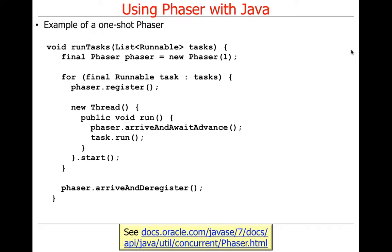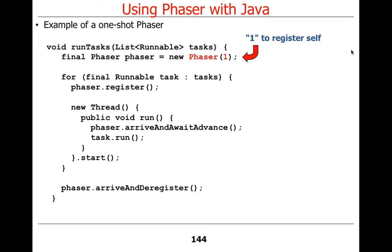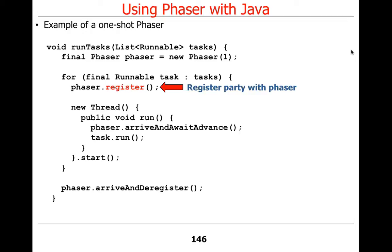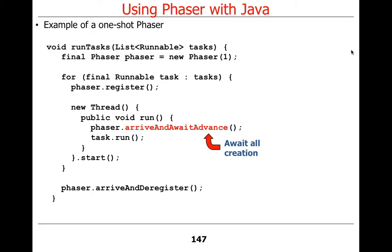The first example is a one-shot phaser. We have a method called runTasks given a list of runnables. The first thing we do is make a phaser with a party count of one for ourselves — we're included, so we don't have to register separately. We then iterate through the list of tasks, and for each one we register the party with the phaser. Then we create a new thread, and when that thread runs, it calls arrive and await advance — asking, can I start yet?